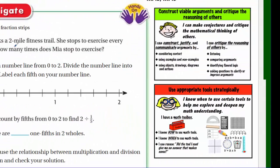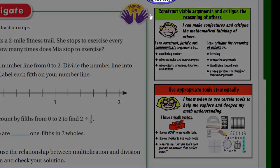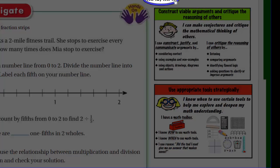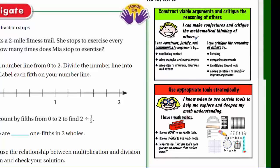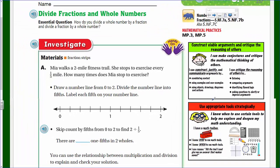We're also going to be looking at a couple of mathematical practices — mathematical practice three and five. Mathematical practice three says: construct viable arguments and critique the reasoning of others. Mathematical practice five is: use appropriate tools strategically. We have some fraction strips as materials.